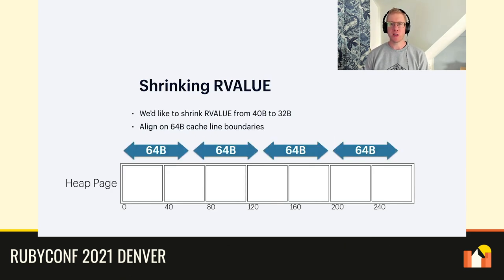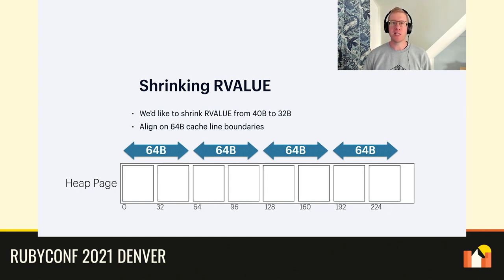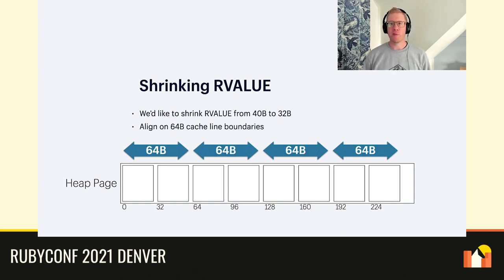One other thing we'd like to do eventually is to shrink the size of the R-value struct from 40 bytes down to 32 bytes. We want to do this because slots in the heap page would then be aligned on CPU cache lines. In the current layout, many of the 40-byte slots straddle two cache lines, so reading a single slot requires two potentially expensive cache lookups. If the slot size were shrunk to 32 bytes, all slots would become aligned on cache lines and reading a slot would never require more than one cache lookup. This isn't something we can do right now, as too many objects are still using all 40 bytes of the R-value, so they'd end up in a 64-byte slot or larger, wasting 24 bytes or more. Overall, we're proud of the progress we've made, but we still have a long way to go and many things to explore.